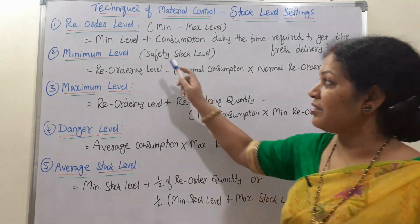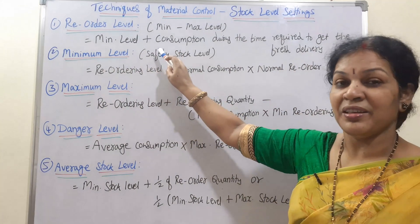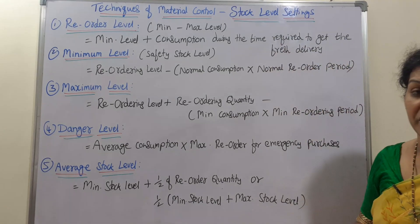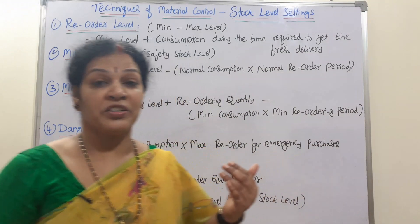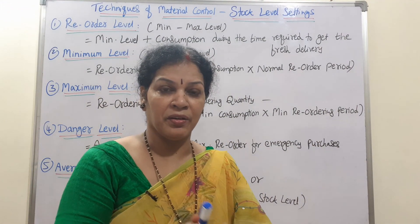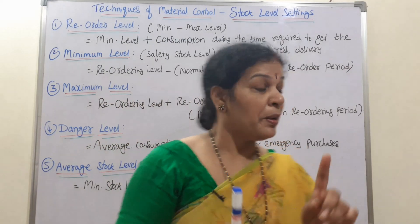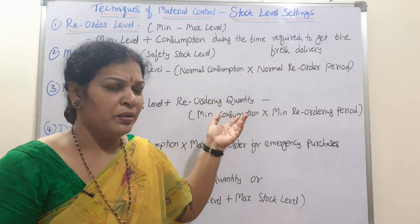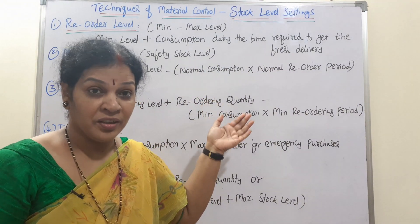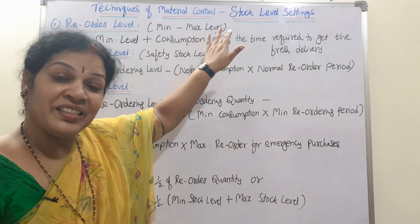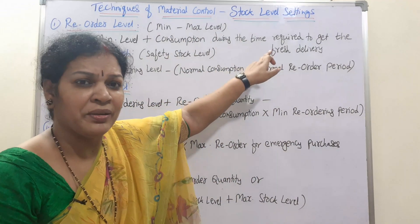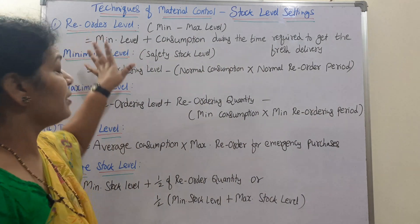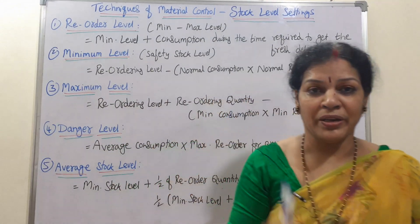How do we calculate reorder level? The formula is: minimum level plus consumption during the time required to get the fresh delivery. For example, suppose we have a minimum of 1,000 units. We add the consumption for 1 or 2 months — whatever time it takes to order and receive that material. That gives us the reorder level.